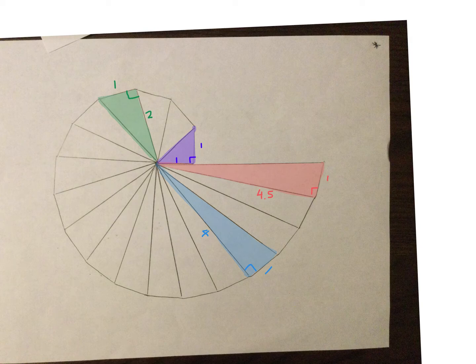All right, when you're done, this is what your paper should look like, minus the colors that I've put on mine. I've gone ahead and identified a couple of the triangles that we're going to find information on. So I'm going to start with the purple triangle and show you what I want you to do for each of them.